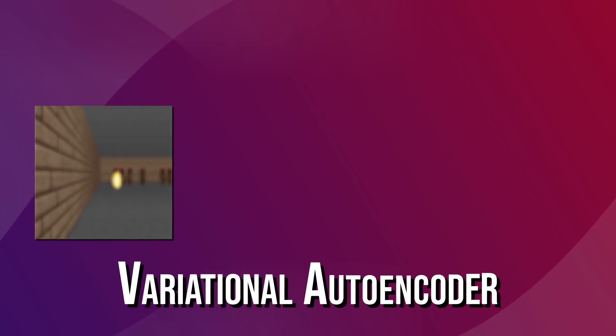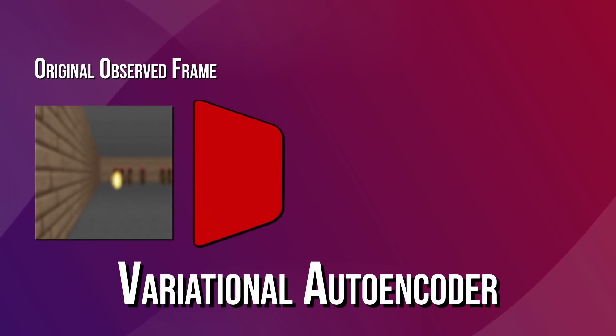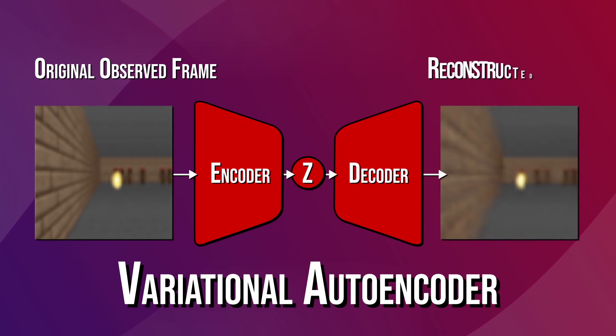We can consider a single game frame as a high dimensional input. It's a 2D image frame that's part of a video sequence. They used a model called a variational autoencoder, or VAE, to learn a representation from this. VAEs consist of an encoder and a decoder. The encoder takes the input and creates a representation. The decoder takes that representation and tries to reconstruct the input.